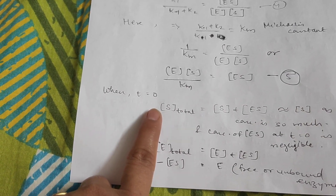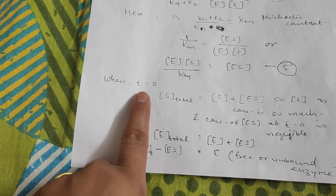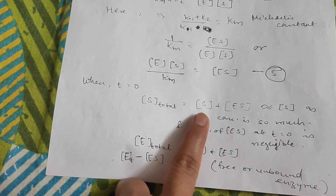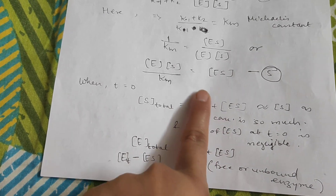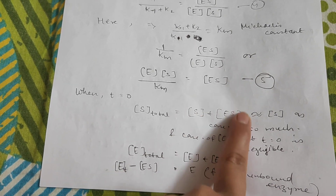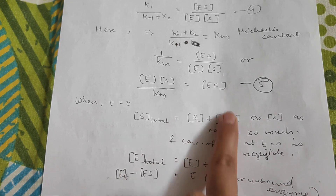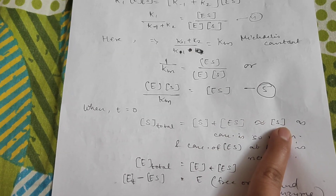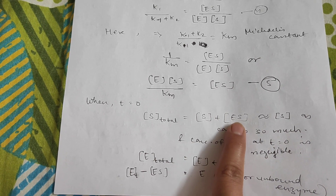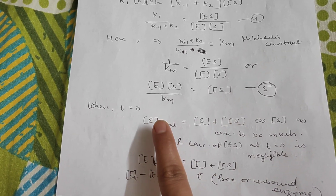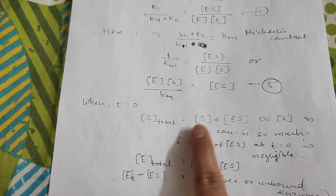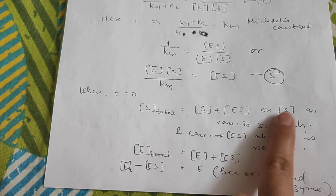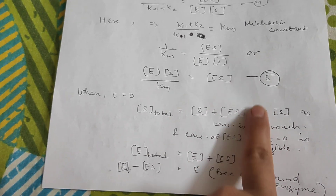Now at time T=0, the total substrate concentration equals the free (unbound) substrate plus the substrate involved in the ES complex. However, the ES-bound substrate is very small compared to total substrate — for example, if 100,000 substrate molecules are present, only about 1,000 are in ES form, so 99,000 are free. Therefore [ES] is negligible, and total [S] is approximately equal to free [S].